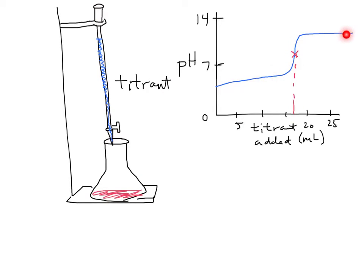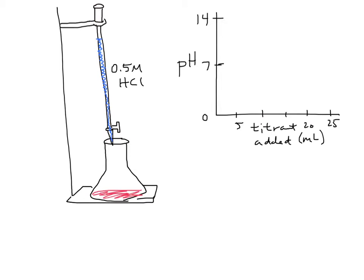This curve looks this way because we started with an acid and added a strong base, so it ends up in a high pH range. Now consider the reverse: let's say our titrant was 0.5 molar HCl, and in the flask we have NaOH of unknown concentration. The reverse process would happen — it's still neutralization, where the acid and base react to make a salt and water. Pause the video and predict what you think that titration curve would look like.